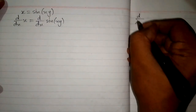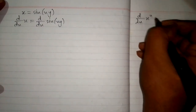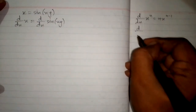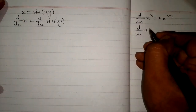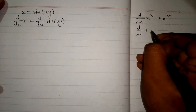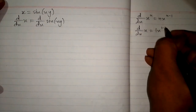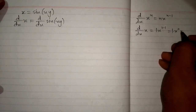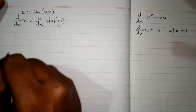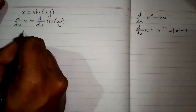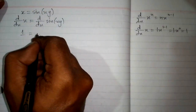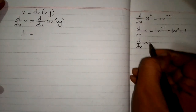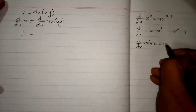Now, we know that the derivative of x to the power n is equal to n times x to the power n minus 1. So, the derivative of x is equal to 1 times x to the power 1 minus 1, which is 1 times x to the power 0, and x to the power 0 is 1. So, 1 multiplied by 1 is 1. So, we can write 1 here.